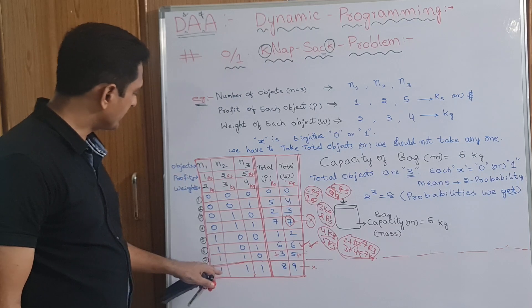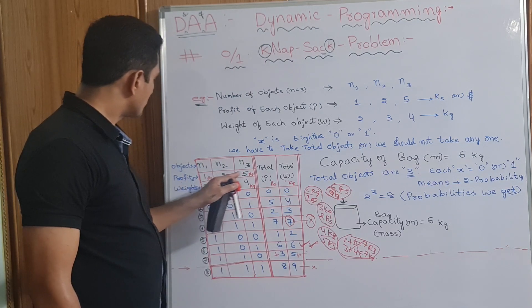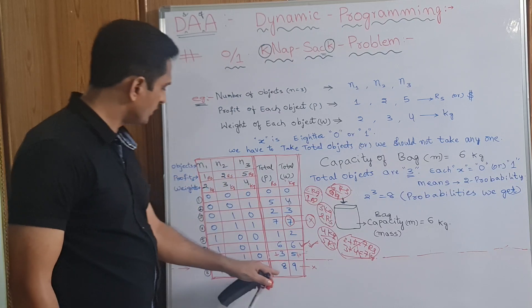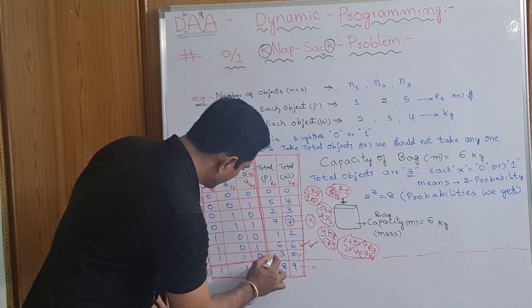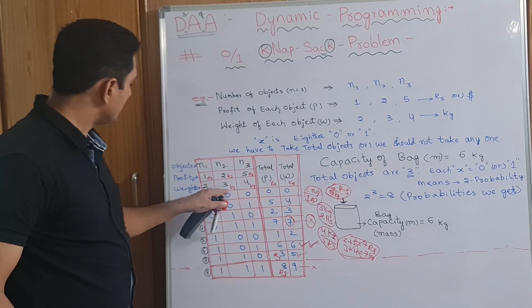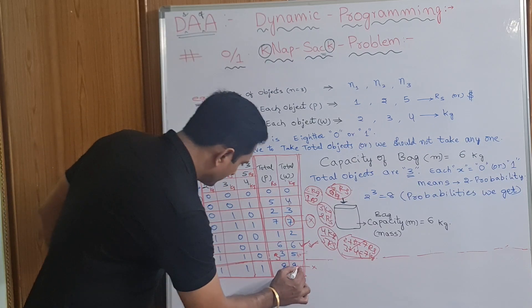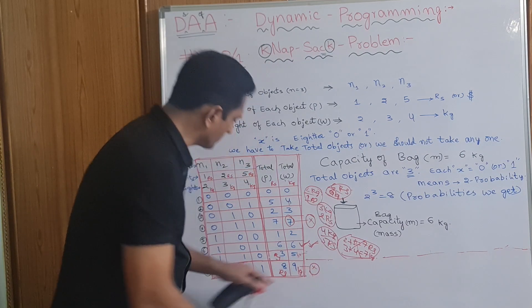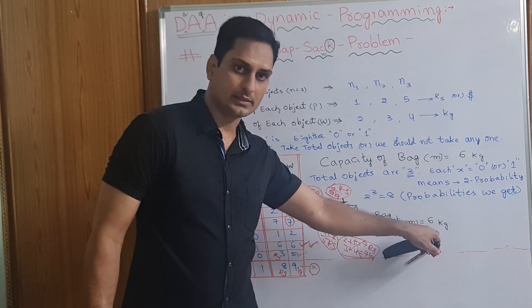1, 1, 1. We have taken all the objects. Means 1 plus 2 plus 5, 8 rupees we got. 8 rupees. 3 rupees. But we are not taking this. And here, 2 plus 3 plus 4, 7 plus 2, 9. 9 kgs. This is also not possible. 9 kgs. Because the maximum capacity bag is 6.